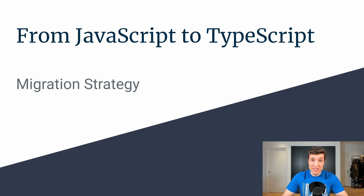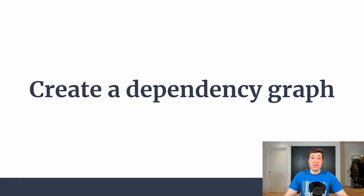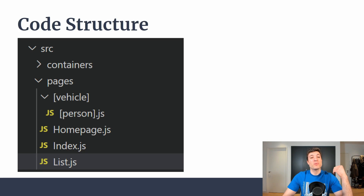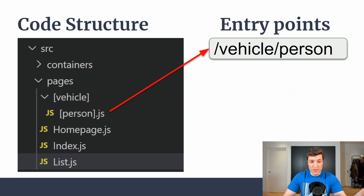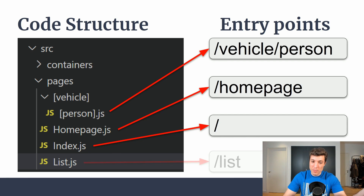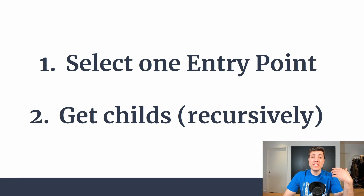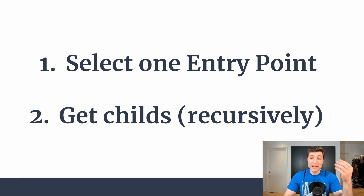In order to follow that migration strategy, we need to create a dependency graph per screen or per entry point. If we look into our last week's application, we have four entry points — one per screen. Then we need to pick one of those entry points, let's say the first one, and get all the children from it recursively.